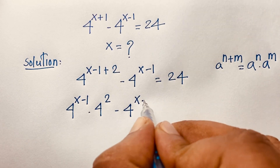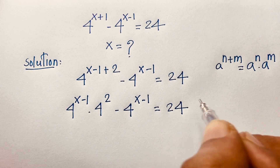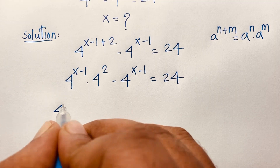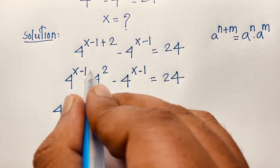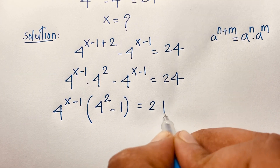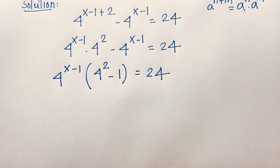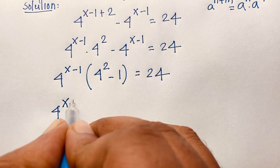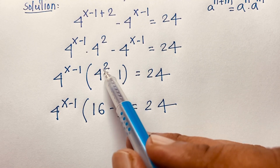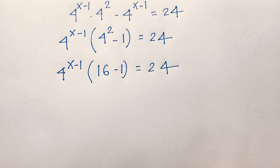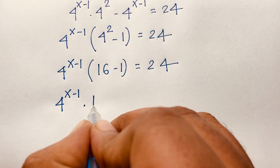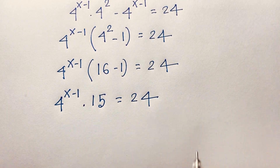So we have 4 to the power x minus 1 times 4 to the power 2, minus 4 to the power x minus 1, equals 24. Here, 4 to the power x minus 1 is common. Factoring it out gives 4 to the power x minus 1 times 16 minus 1, equals 24, since 4 to the power 2 is 16.